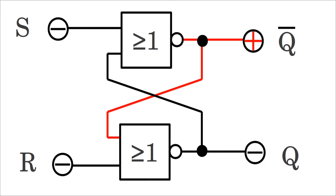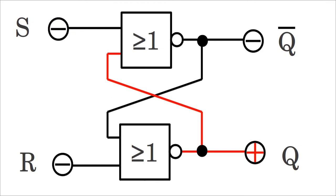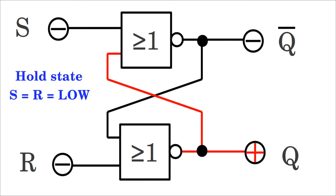If input S is connected to high level, the state of the circuit changes. The output of the upper gate changes from high to low level, hence both inputs of the lower NOR gate are now on low level. The output of the lower gate changes to high level, by which both inputs of the upper gate are high. The state of the circuit is stable: Q is high while Q-bar is low. If input S falls back to low level, the feedback maintains the output state. While both inputs are low, the circuit is in hold state.